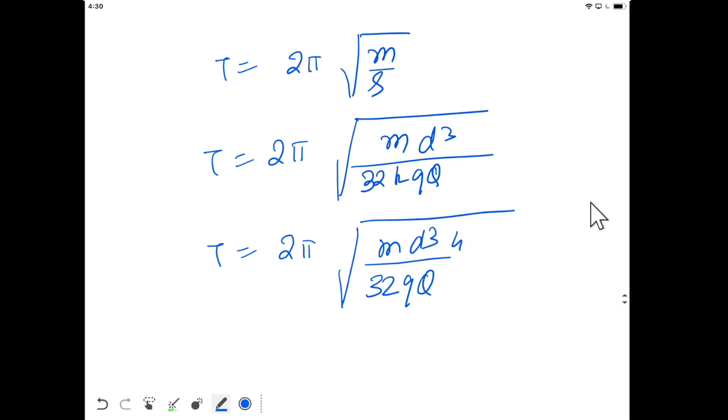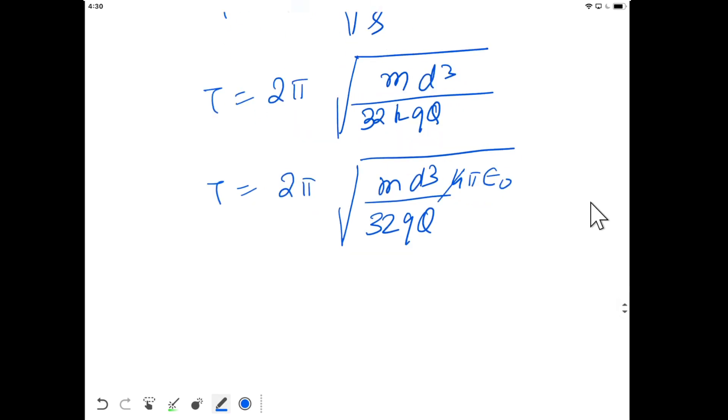If you cancel out 32, we get 8. Time period will be 2π√(md³/(32Qq times 4πε₀)) equals 2π√(md³ε₀/(8Qq)).